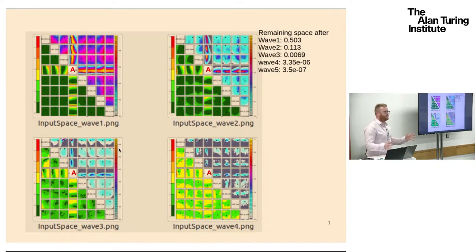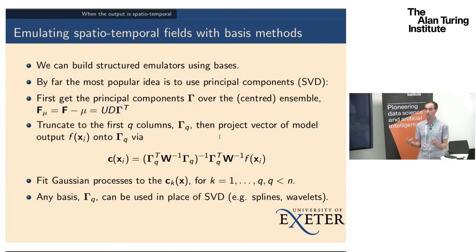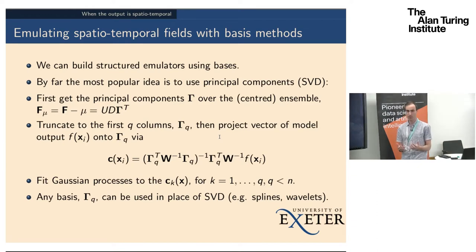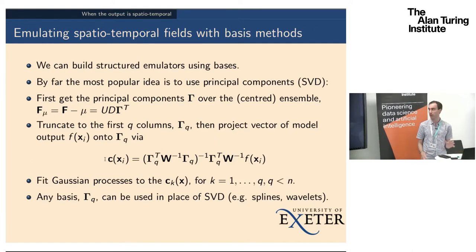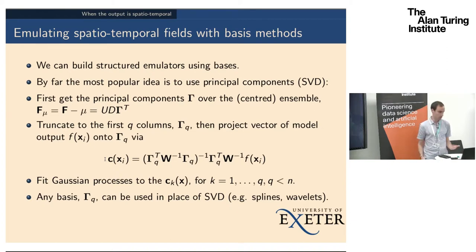James is going to explain how we do spatial emulators of many dimensions. The way we do this — and the way a lot of other people do it as well — is to use some low dimensional representation of high dimensional spatial output. One obvious way is to use principal components, SVD. You explain as much variability across your ensemble of model runs as possible, project the data onto that giving you a set of coefficients on each, truncate after a small number of basis vectors once you've explained the majority of variability, and then fit univariate Gaussian processes to each of this small number of coefficients.